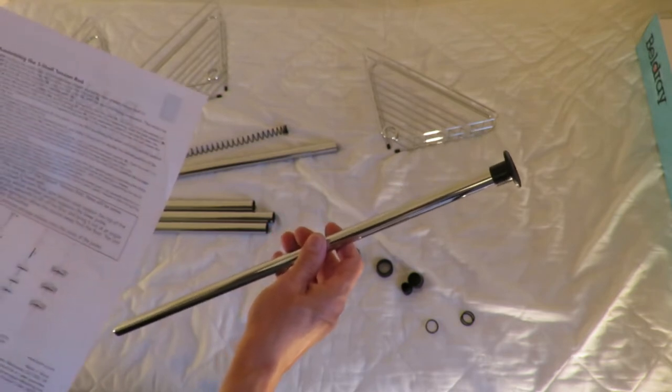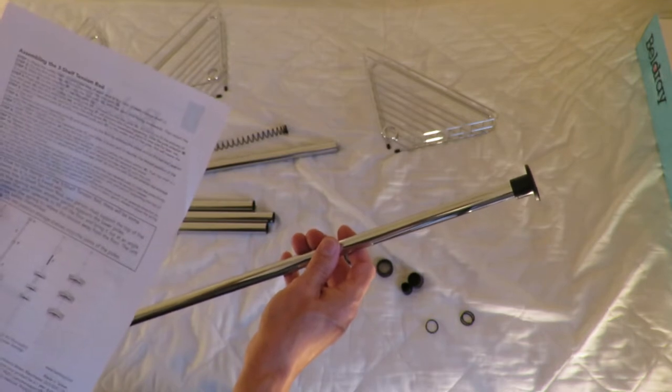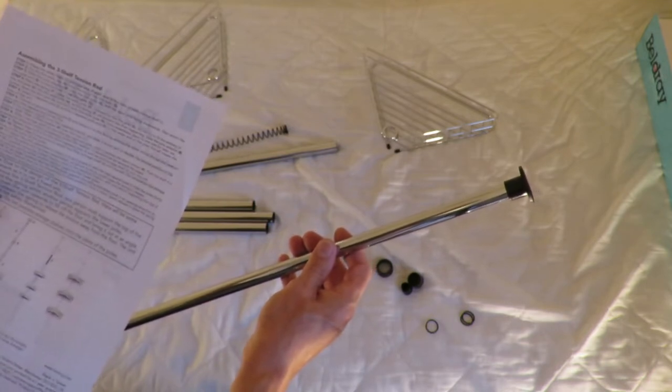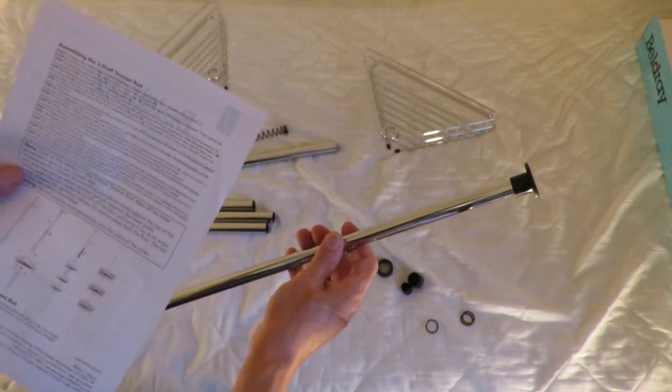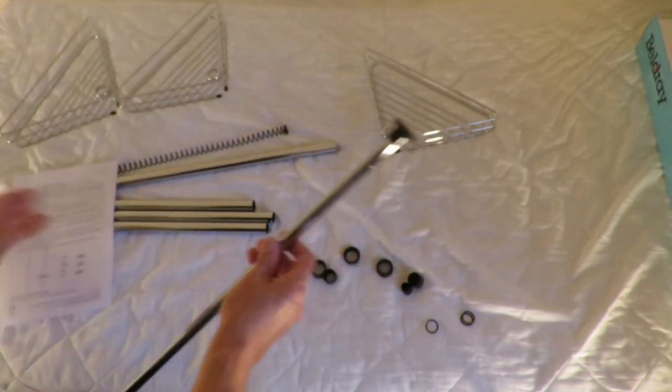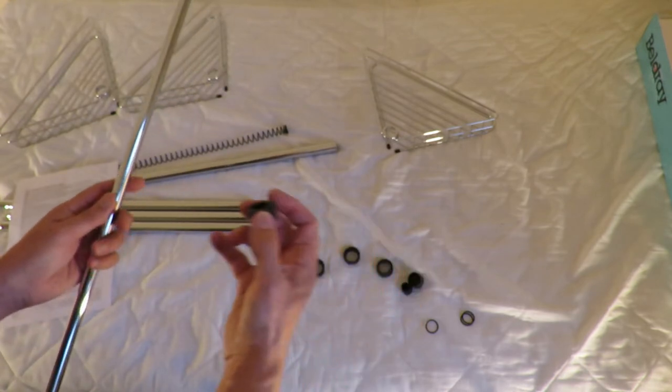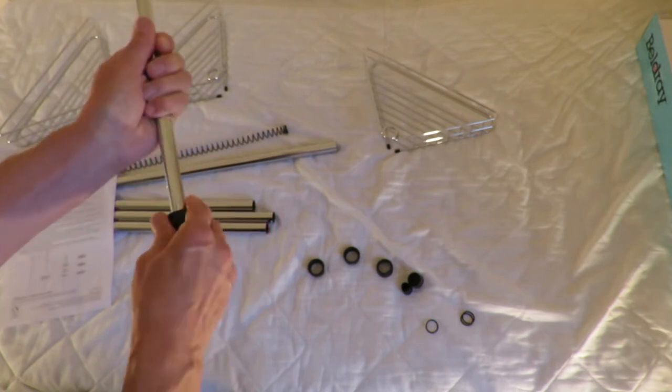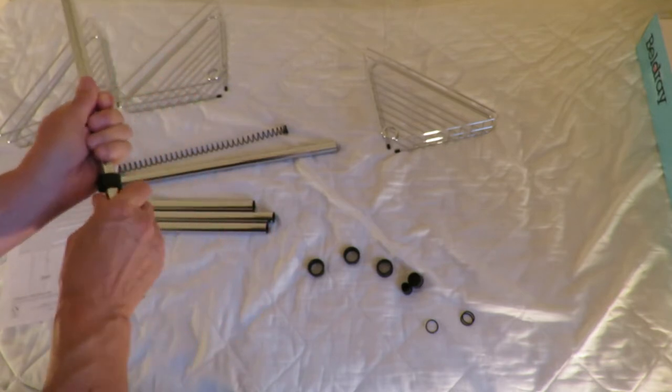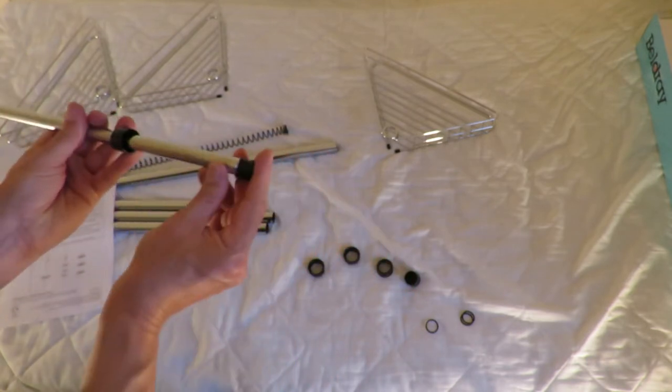Slide pole adapter B onto thin pole G with open end facing downwards. Then attach thin pole end E to the bottom of thin pole G. That's the only one that looks like that. So that goes on there with the opening at the bottom. And that's the only one that's small enough to go on there.